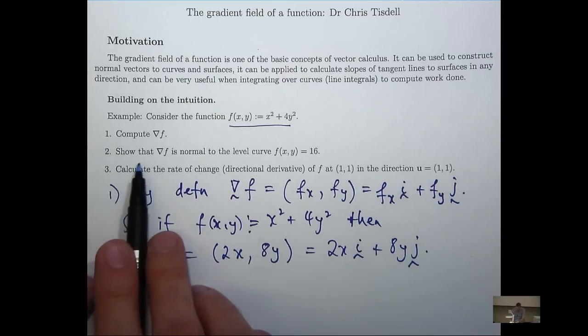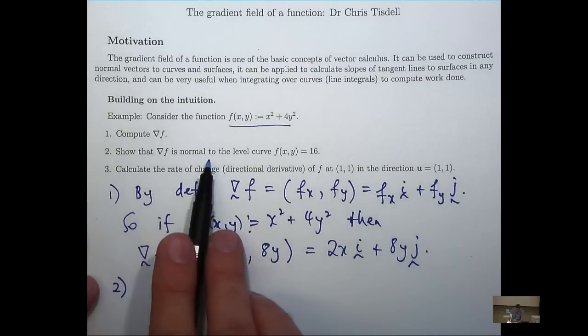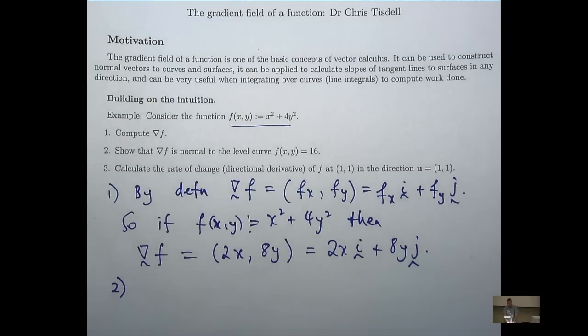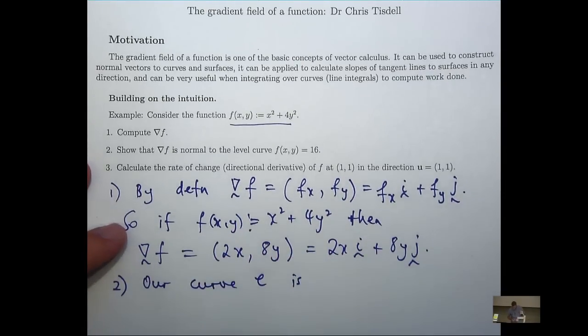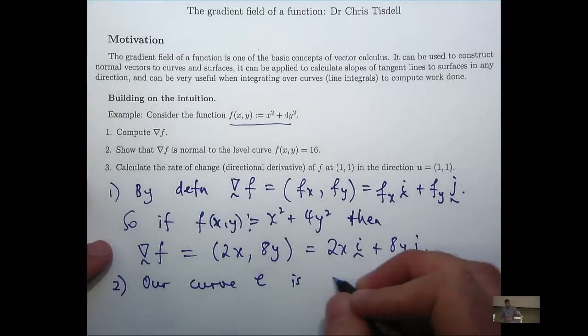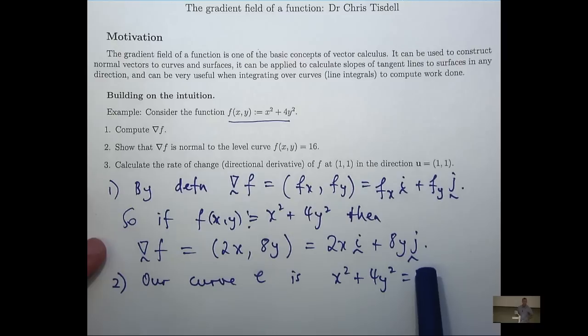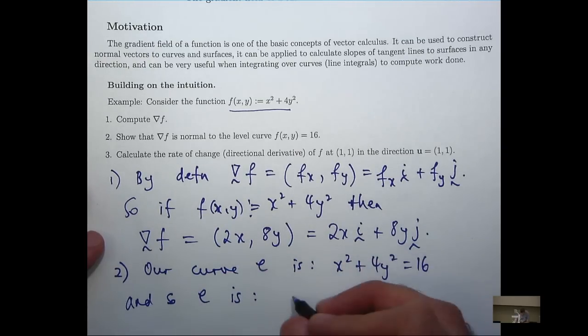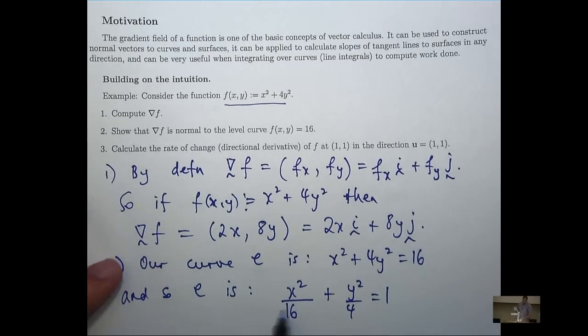We're asked to show that the gradient field associated with f is normal or perpendicular to the level curve x squared plus 4y squared equals 16. So first of all, let's investigate what this type of curve is. Let's call it curly C. It's just the set of points satisfying this equation. You might recognize this, but if you don't, I'm going to divide by 16 and produce the following form. Now, this is an ellipse.